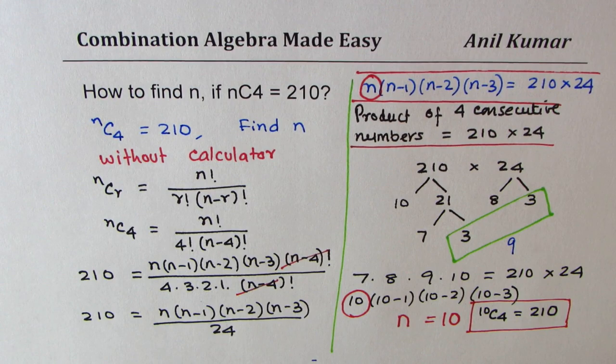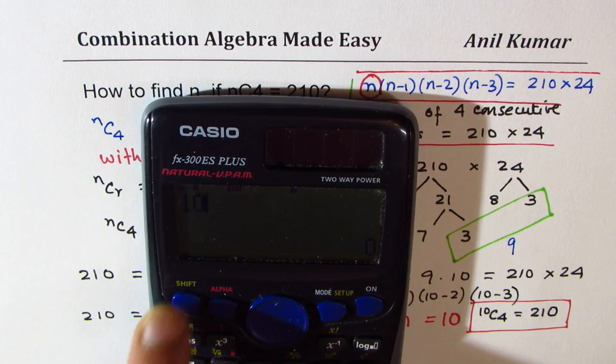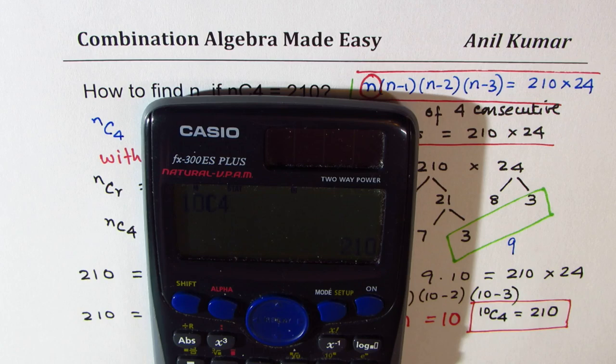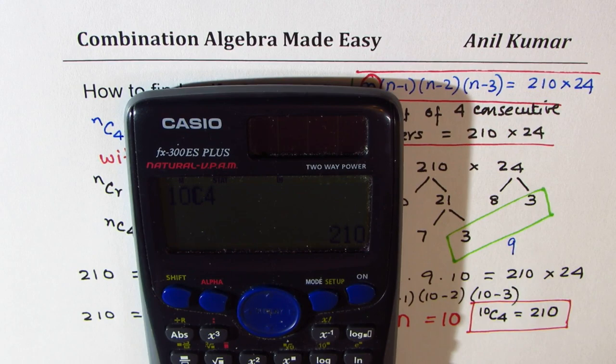Let us verify using the calculator. Do we get the same result or not? So here is 10, shift combination 4 equals 210. Clearly 210. So that is how we could do it.